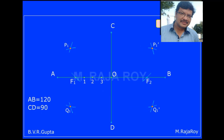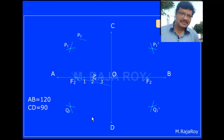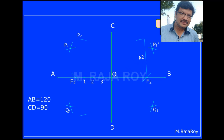Now take A2 as radius with F1 as center and draw one arc on the top side and one more arc on the bottom side. Then change the center to F2 and draw one arc on the top side and one more arc on the bottom side as shown.